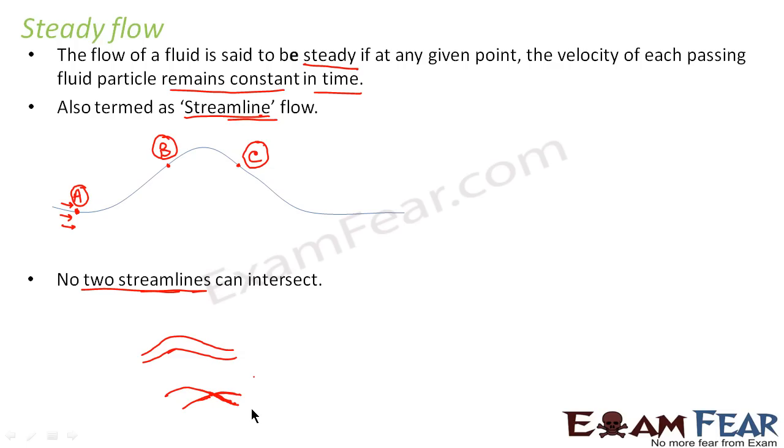So basically we understood what is a steady flow. When we say a steady flow, it means at any given point, velocity of all the fluid particles which are passing will be the same. And also these lines are called streamlines. Generally the path which the particles follow in a steady flow are termed as streamlines, and no two streamlines ever intersect.